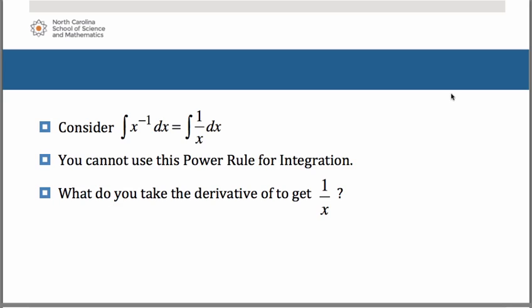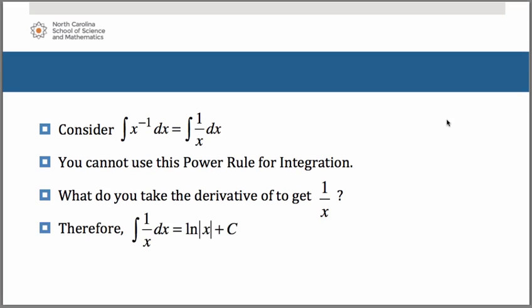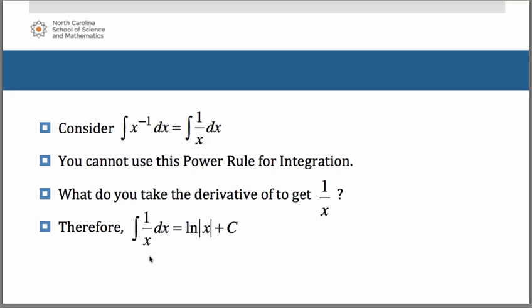Thinking of the fact that derivatives and anti-derivatives are inverses of each other, can you think of a function that you take the derivative of and get 1 over x as the answer? Hopefully you remembered that if you take the derivative of natural log of x, you get 1 over x. Therefore, the anti-derivative of 1 over x dx is the natural log of the absolute value of x plus c. This becomes the first special anti-derivative rule you need to memorize.